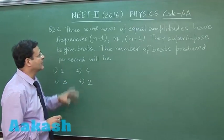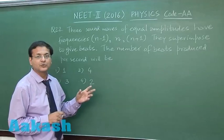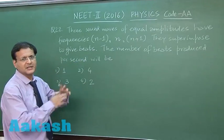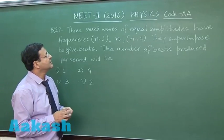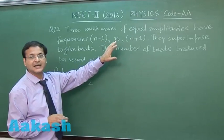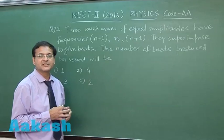Now once again this question 22 is from the chapter sound waves, and that too the concept of beats. Here you have been given 3 sound sources. These are typical and very standard questions in which the 3 sources have the frequency n-1, n, and n+1. You can consider it to be hertz because frequency is given to you.